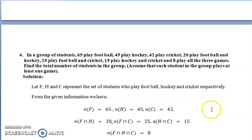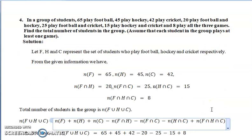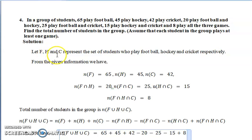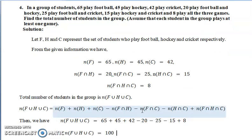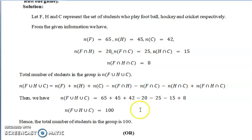This is similar to the previous problem. From the given data, we define F = football, H = hockey, C = cricket. They are asking for the total number of students, which is n(F∪H∪C). We know the formula for n(A∪B∪C); replacing A, B, C with F, H, C respectively and substituting all the given values, we simplify to get 100 as the answer.